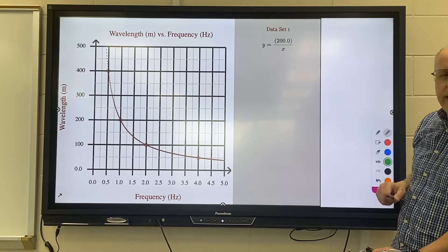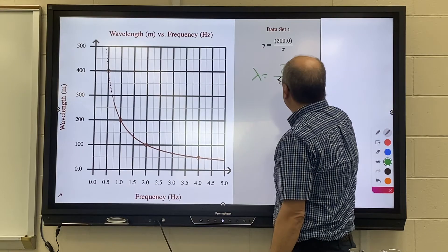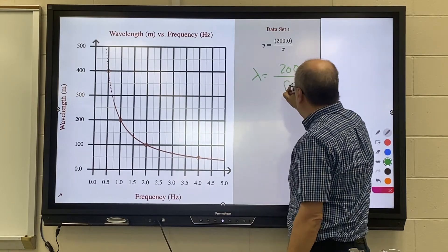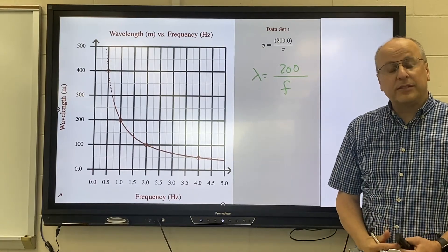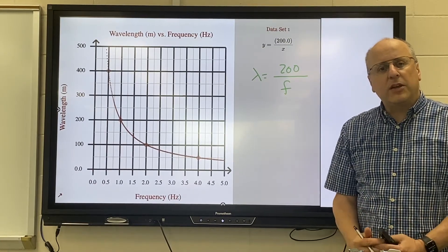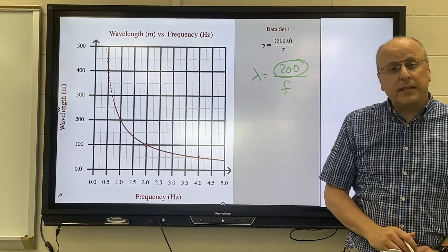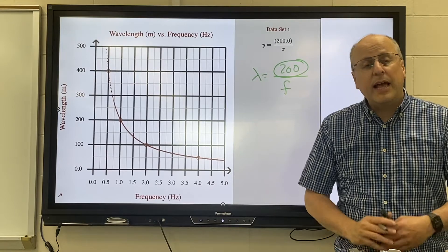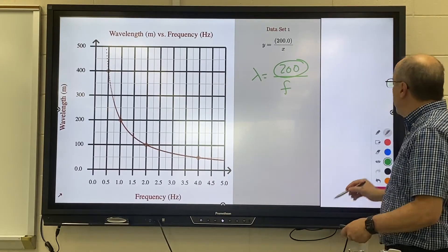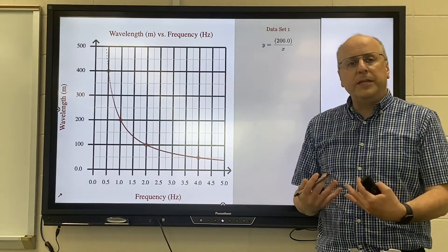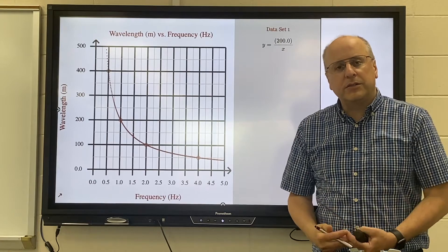When we graphed it out we saw it was a perfect inverse graph. Again y is wavelength, the x is frequency. So higher frequencies, smaller wavelengths. Double the frequency, you cut the wavelength in half. This graph constant in this case 200 has physical significance that we'll talk about in just a minute. It will not always be 200 but it will be some constant that has importance to our situation.